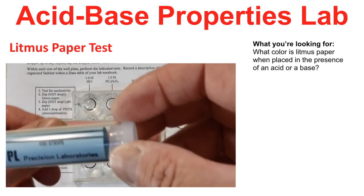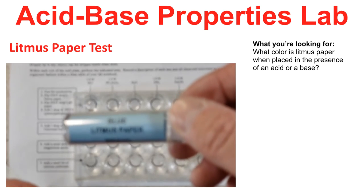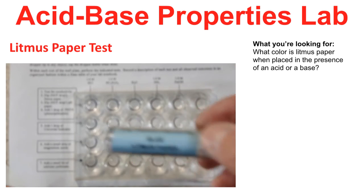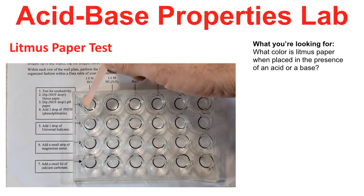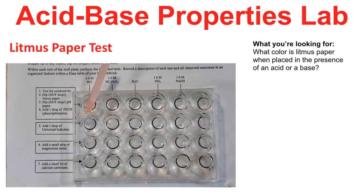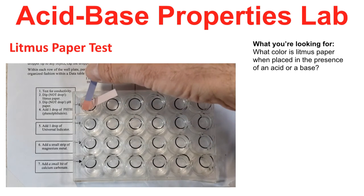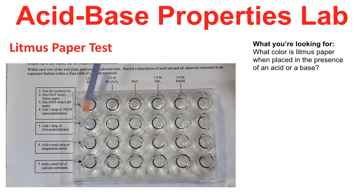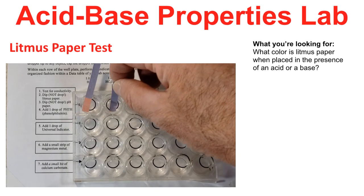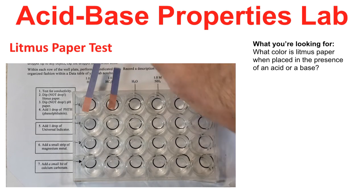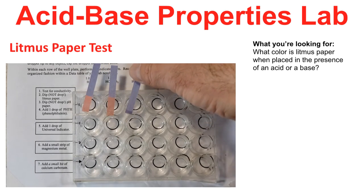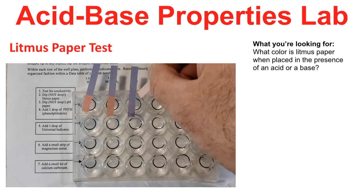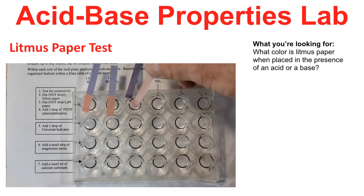Litmus paper serves as an indicator of whether a solution is acidic or basic, turning a specific color in an acidic solution and a different color in a basic solution. There's red litmus paper and blue litmus paper. Here we dip red in a solution — it doesn't turn color. So we dip blue in the same solution, and the blue turns red when placed in the hydrochloric acid. We also put a blue strip in acetic acid, and the blue strip turns red there too. We put a blue strip in water, and it doesn't turn color. The red strip in water doesn't change either — so litmus paper doesn't turn color in water.